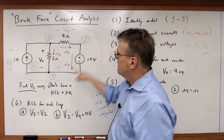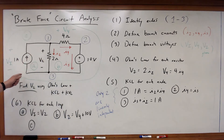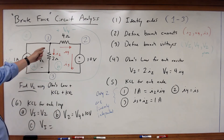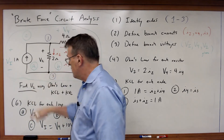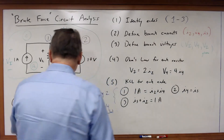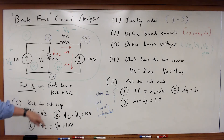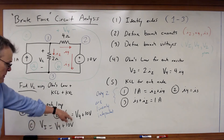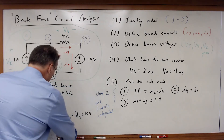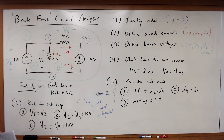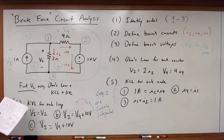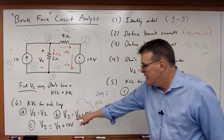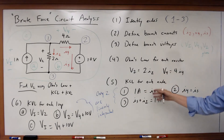For loop C, starting and traveling around, VI is a rise, and that equals V4 plus 10 as the drops, coming back around to the starting point. So I wound up with three loop equations. Once again, note that only two of these are linearly independent. If VI is equal to V2, I can substitute, and loop C's equation becomes equivalent to loop B. So for the KVL equations, I also get two linearly independent equations.